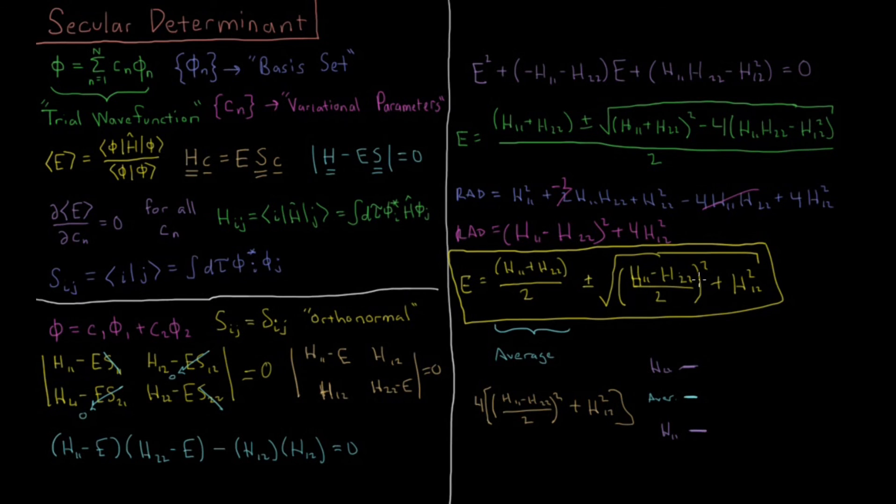Then this term in the radicand here, what we'll see is if we have H11 and if we have zero coupling here, if this H12 is zero, then we're just going to get H11 for the energy. So this term here would be the coupling of the states or the mixing of the states. So if we turn off this coupling matrix element, if there's no interaction between state 1 and state 2 in this Hamiltonian matrix, then the value we're going to get is just the ground state, and that's with no coupling.